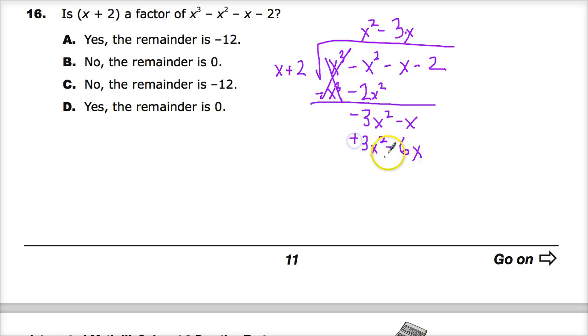And again, this changes signs. So does this one. Those cancel. 5x. So I want to eliminate 5x here. So I'm going to do plus 5. And again, change the signs. Before I move forward. See? It's not a factor. Because you have this negative 12 left over. So you'd end up with x squared minus 3x plus 5 minus 12 over x plus 2. And who wants that?